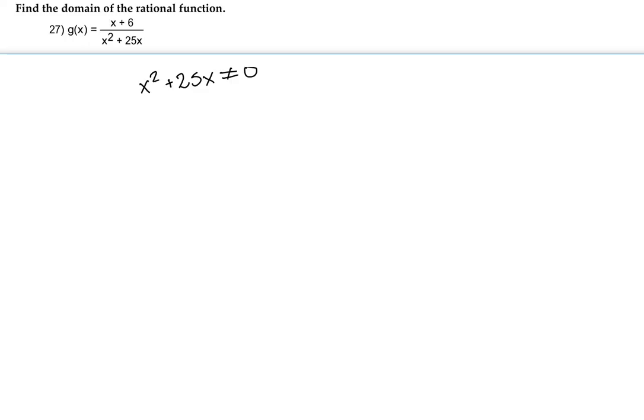I'm going to see what x equals when I set the denominator equal to 0. So here I'm going to factor out an x, leaving me with x plus 25.